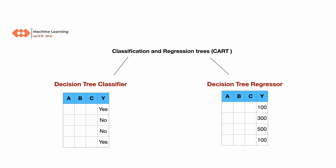Everyone is familiar with the term CART — Classification and Regression Trees. Under CART we have two kinds of decision trees: Decision Tree Classifier and Decision Tree Regressor. The regressor gives a continuous value such as 100, 300, or any number, and it can also be a dichotomous binary value of zero or one.